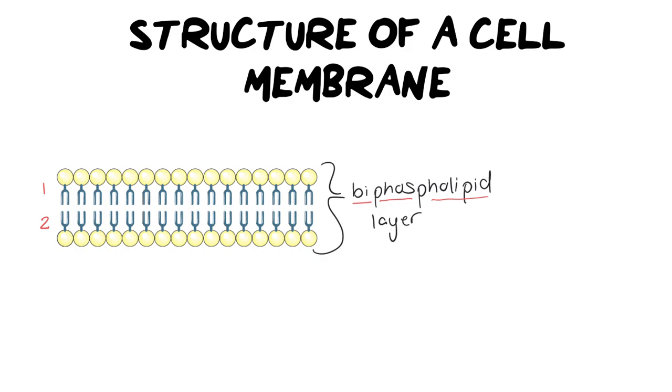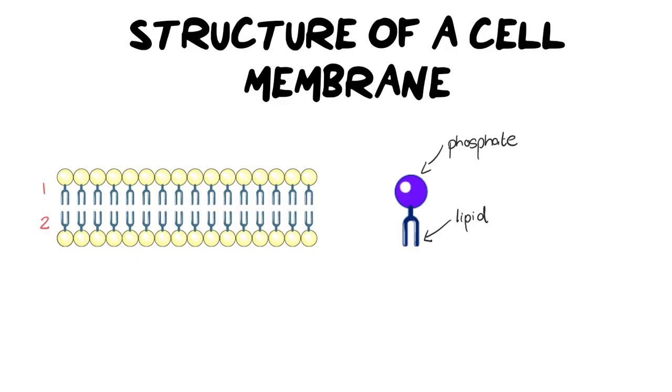If we zoomed in on one of these biphospholipids, it would look something like this. It kind of looks like a ball with two tails at the end. And what you are looking at here is a building component of the cell membrane. Looking at more detail, we have a head sitting at the top here, and this is made out of a phosphate ion. Below here we have a little tail, and the tail is made out of a lipid. Remember, a lipid is a fat.